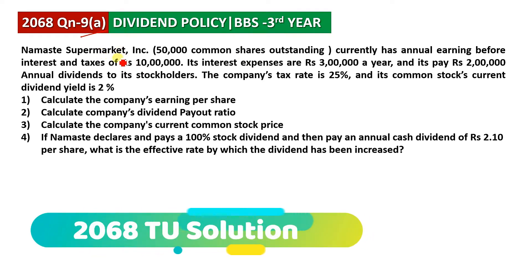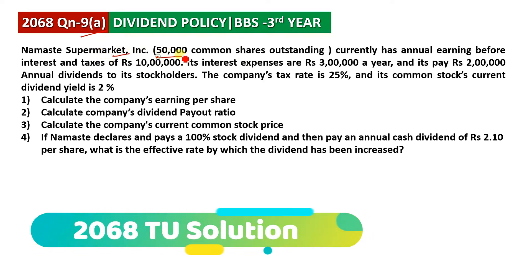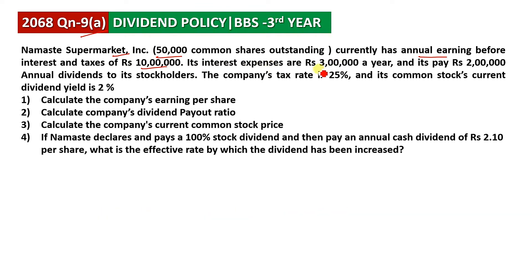In the supermarket company, the common shares outstanding are 50,000. The interest expenses are $3,000,000. The annual dividend paid is $2,000,000. The company tax rate is 25%. The current dividend yield is 2%.